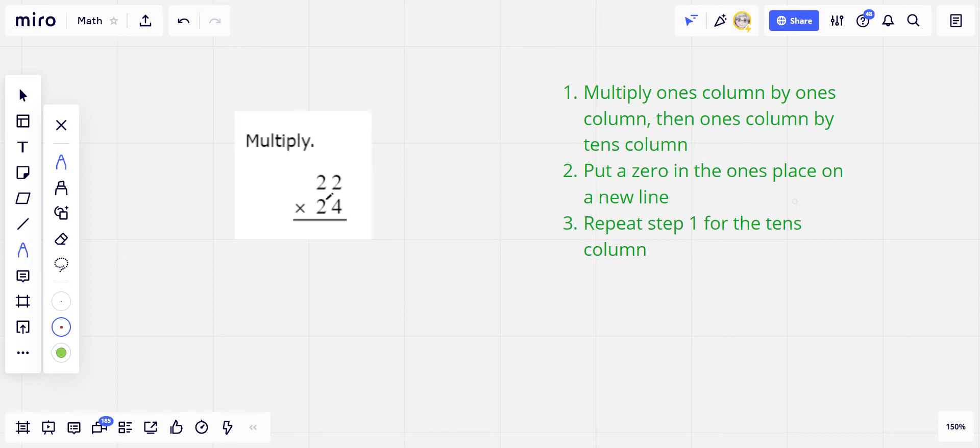In this first problem, we've got 22 times 24, and what we're going to do is do what we did before starting with the ones column, that is multiply the ones column by the ones column on top, put the answer down here, carry if necessary.